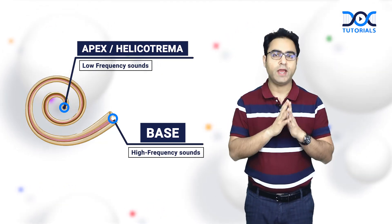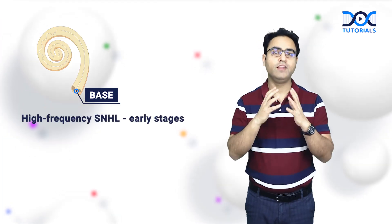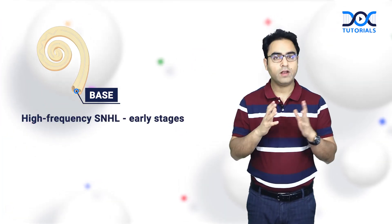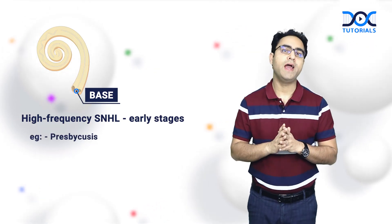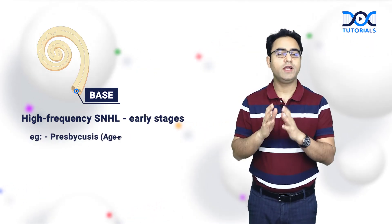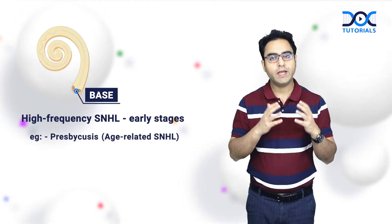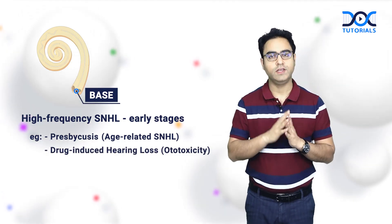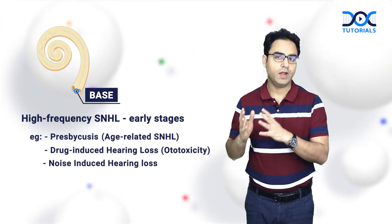Do keep in mind: whichever disease affects the basal turn of the cochlea first is going to cause high frequency sensorineural hearing loss (SNHL) in the early stages. What are the examples of such disorders? Number 1 is presbycusis — age-related SNHL. Number 2 is drug-induced hearing loss, meaning ototoxicity. And number 3 is noise-induced hearing loss.